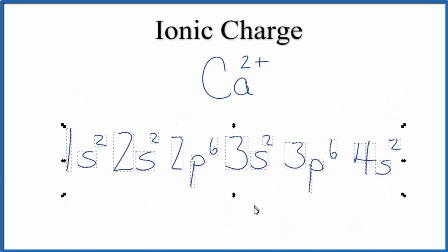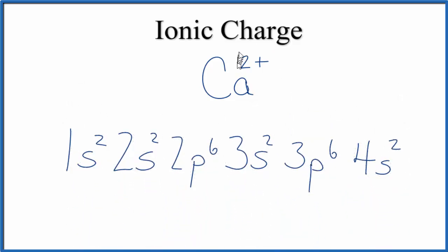So here's the electron configuration for not calcium 2 plus, but just calcium as it's found on the periodic table, Ca. And you'll note, first energy level has 2, that's full with two electrons.